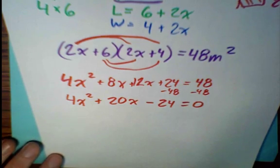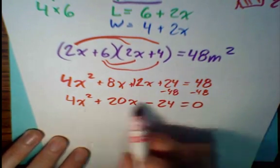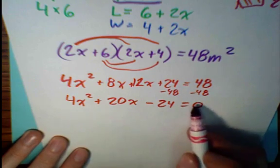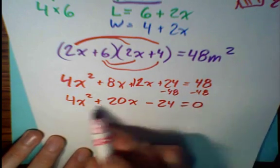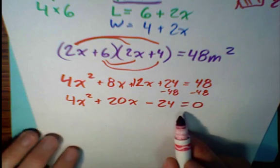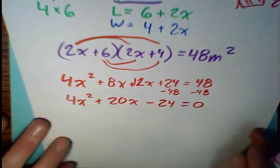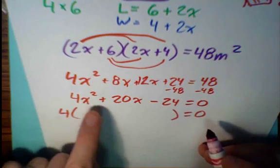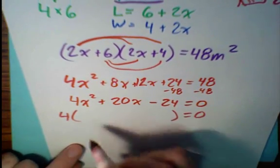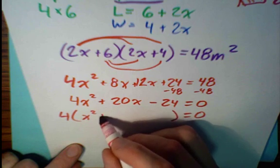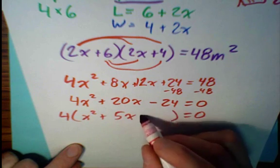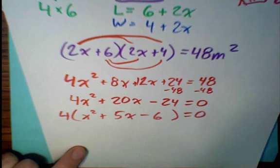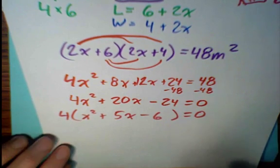We're now going to use the 0 product rule. We can't use it right away, but the point behind solving this for 0, or setting it equal to 0, is to factor this polynomial. Now one of the most important factoring techniques is to factor out a GCF. And here the GCF is 4. So 4 times the quantity, x squared plus 5x minus 6. And now we can continue our factoring.